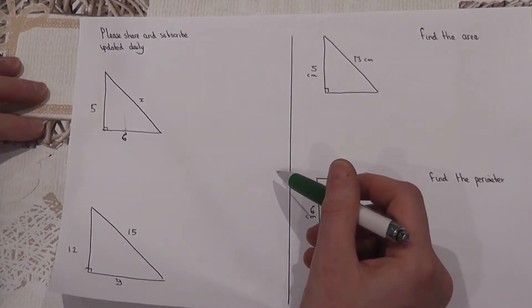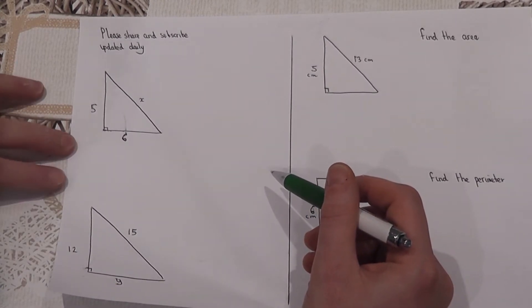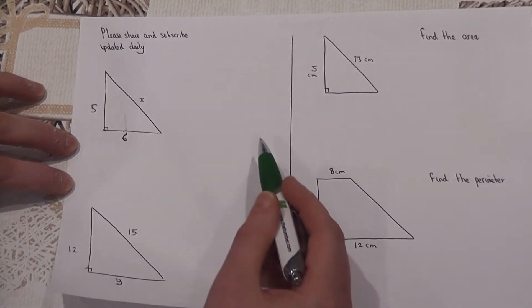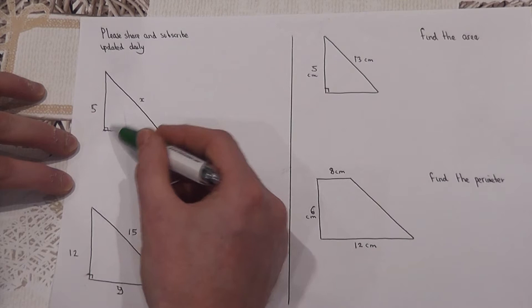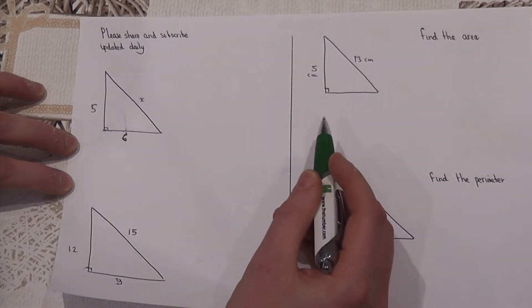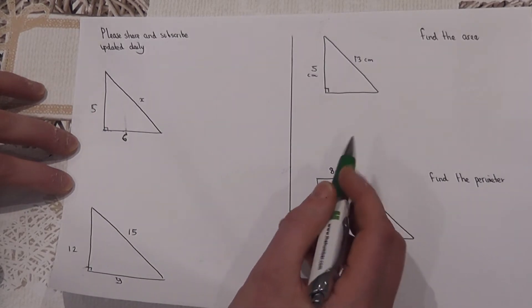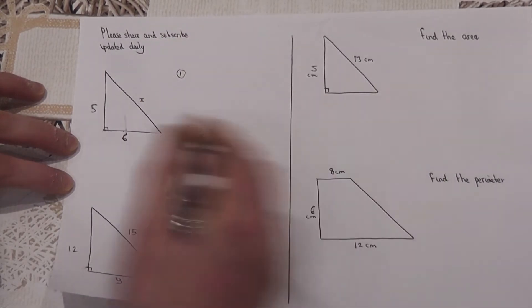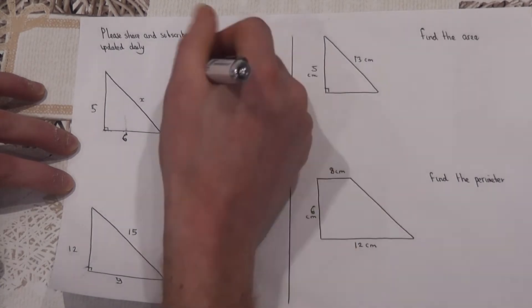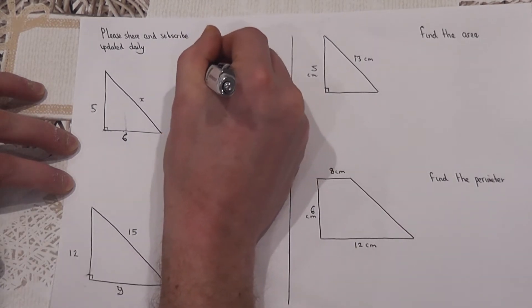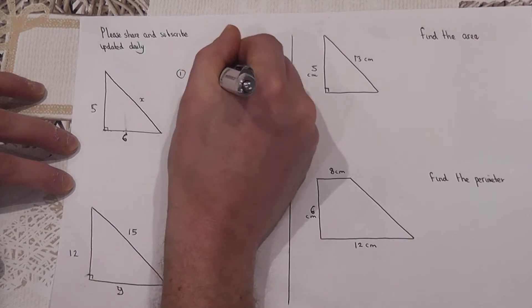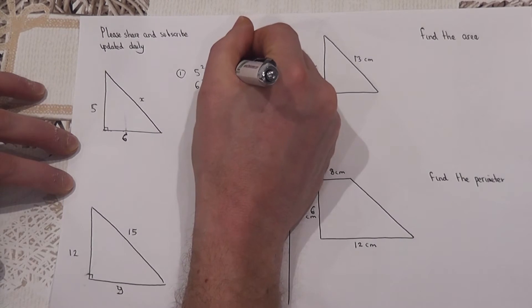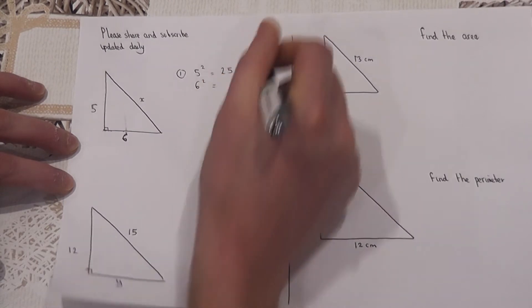The first two questions revise the key idea about Pythagoras. In problem one we're asked to find the hypotenuse, which is the length opposite the right angle. To do this we do three simple steps. Step one is to square the two sides, so 5 squared and 6 squared.